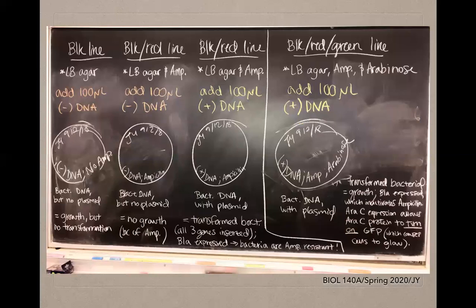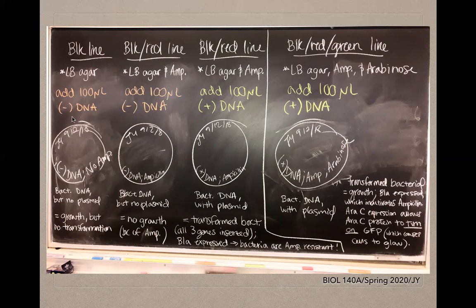Towards the end of the protocol, two microcentrifuge tubes are prepared. The first tube contains an E. coli bacterial sample but no plasmid. The second tube contains a bacterial sample that includes the PGLO plasmid with its three genes. Essentially, the second tube contains transformed bacteria while the first tube contains untransformed bacteria.